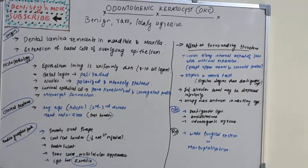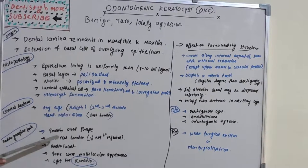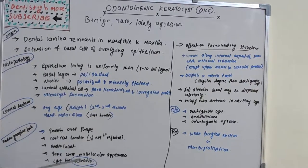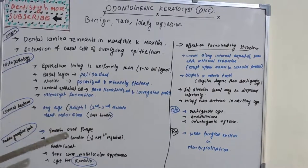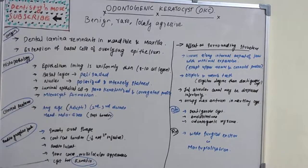Clinically, OKC is commonly seen in the second to third decade, though it can affect any age group, especially adults. The mandibular molar area, particularly the posterior border, is most commonly affected. Radiographically, it has a smooth oval shape. The cortical border is well defined if not secondarily infected. It is mostly radiolucent, but in some cases bone septa give a multilocular appearance, and keratin is present within the cyst — hence the name keratocyst.